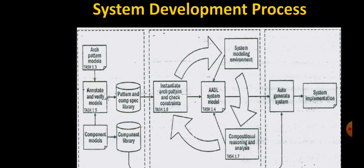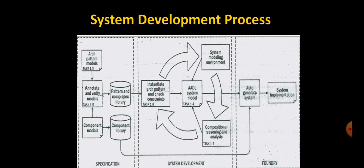Moving to the second phase — the system development phase — architecture patterns are instantiated to create a system model. Starting at a relatively high level of abstraction, a system architecture is created and instantiated from the library to create the initial system model. As the diagram shows, system development is a repetitive process; this model is then refined by the repeated application of design patterns and manual modeling to create a detailed system design.